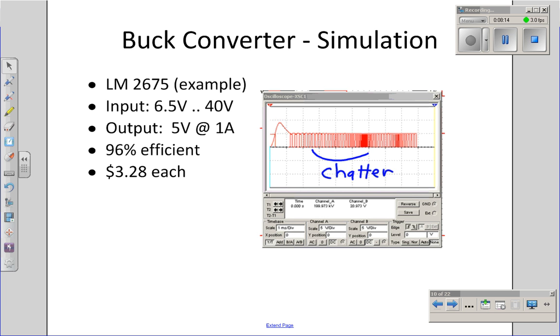That's an example of a buck converter. A commercial one would be an LM2675, as an example. It allows you to convert anything between 6.5 and 40 volts down to 5 volts at up to 1 amp. It's up to 96% efficient, which is much better than, say, a voltage divider and a buffer. The disadvantage is it's $3 versus $0.39.